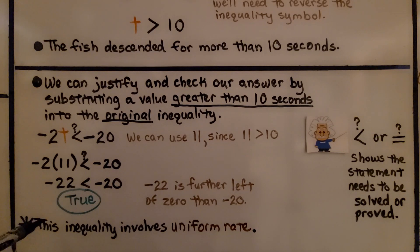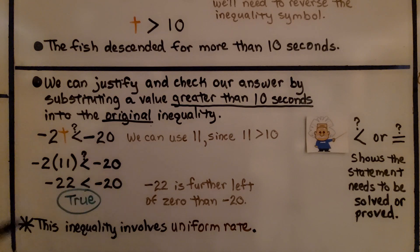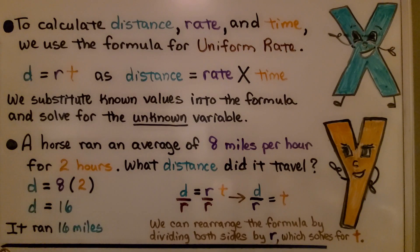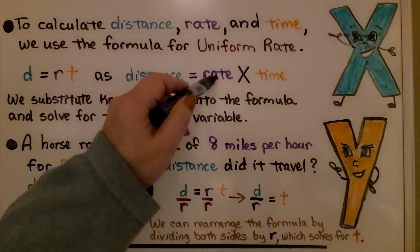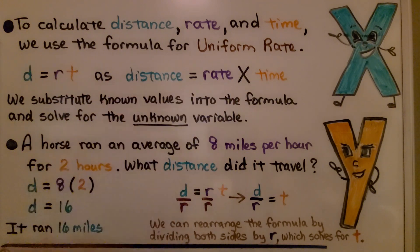This inequality involved uniform rate because it had time, rate, and distance. To calculate distance, rate, and time, we use the uniform rate formula: d equals rt, meaning distance equals rate multiplied by time. We substitute known values into the formula and solve for the unknown variable.